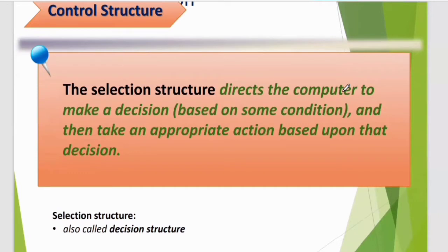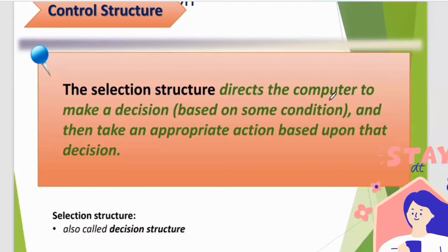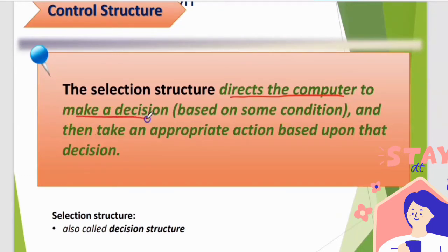Before we further discuss control structure selection, what is a control structure selection? The selection structure directs the computer to make a decision based on some condition, and then take an appropriate action based on the decision.